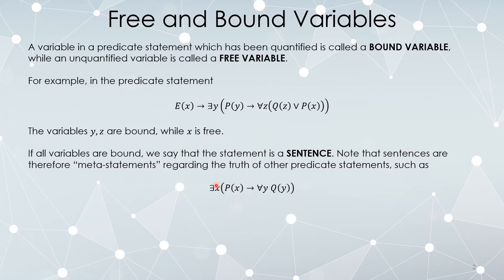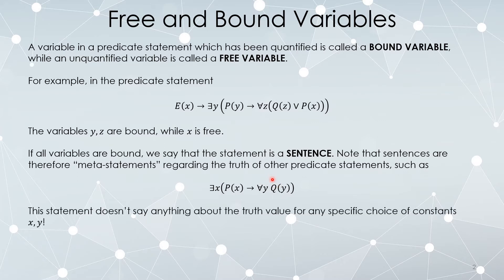Does there exist an x so that if p of x is true, then for every choice of y, q of y is true? It's not making a claim about what specific constants this becomes true for, but rather a statement: does there exist such a choice at all, so that if this hypothesis is true, then for every choice of constant y, this conclusion becomes true.